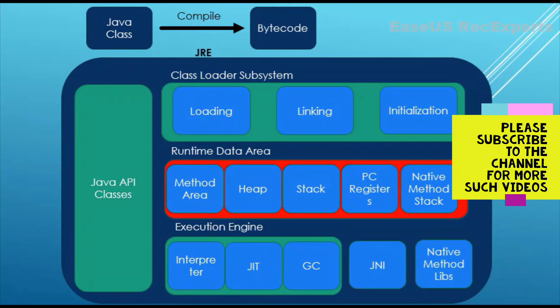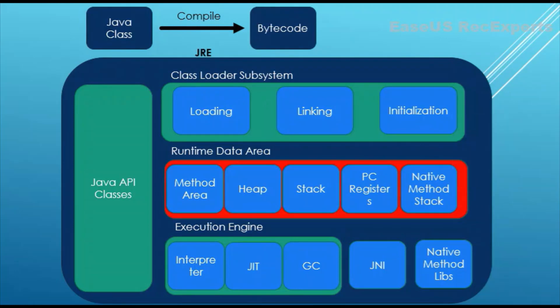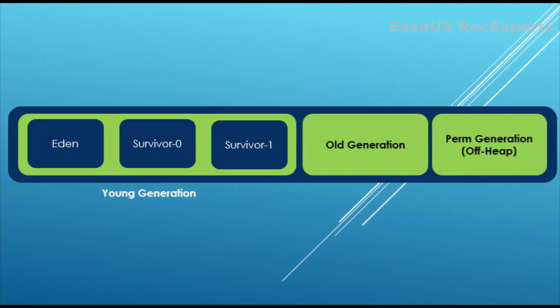In one of my previous videos where we discussed JVM architecture, we already saw this component — the runtime data area. This area is actually used to allocate memory. Specifically, all objects are stored in the heap area, and all the references to those objects are stored in the stack.